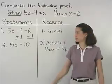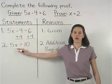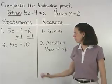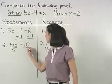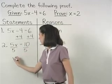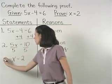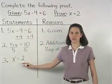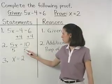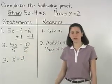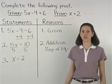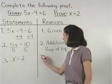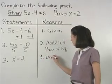Since we now have 5x equals 10, our next step in solving the equation is to divide both sides of the equation by 5 to get x equals 2. So statement 3 is x equals 2. And remember, the reason that we can divide by the same quantity on both sides of an equation is based on the division property of equality. So reason 3 is the division property of equality.